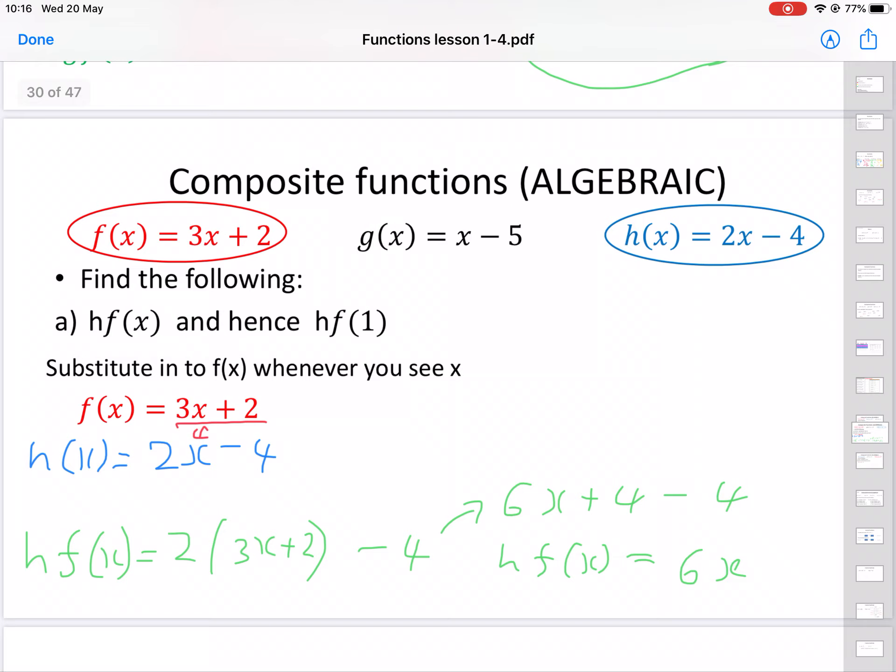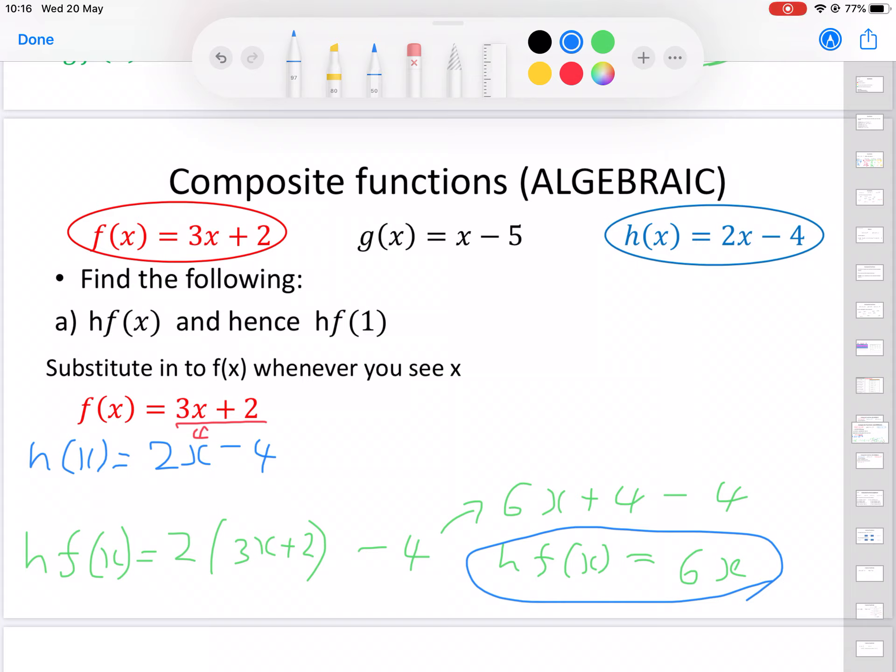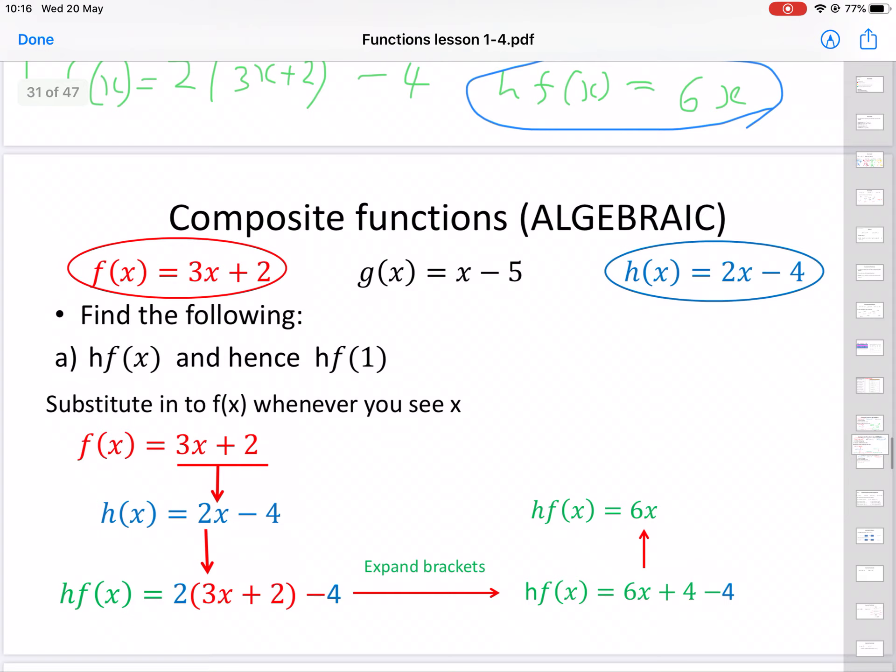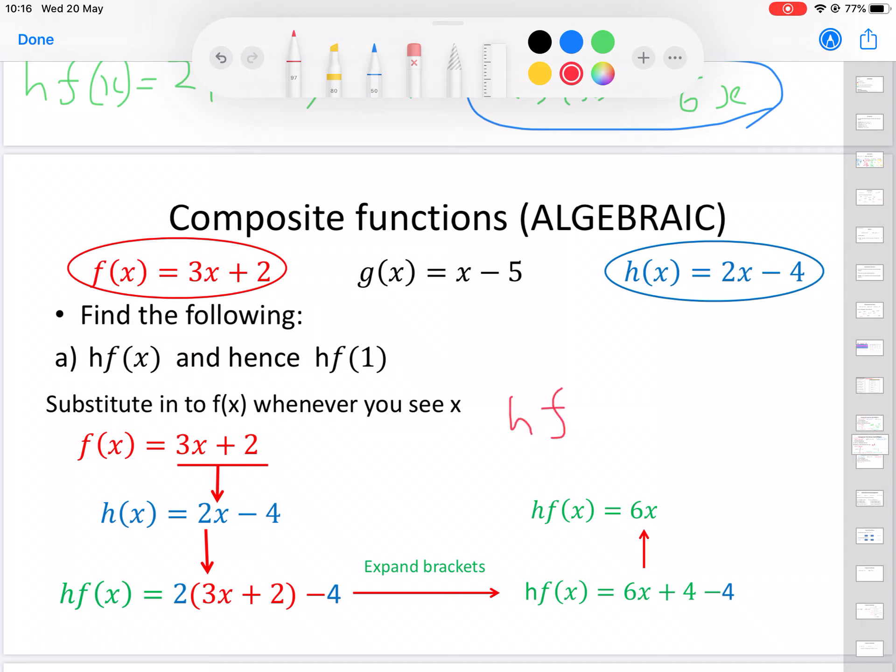So hf(x) = 6x. That there would be my final answer for that first stage, what is hf(x). A bit more tricky because we've got to make sure we're doubling that first function, but make sure you're going through it gradually and step by step. Here again, a bit clearer. We started with our f function, substituted it into our h function. You can see here we've still got the two lots of the 3x + 2, and then minusing that 4. Expand the brackets and then simplify, and now we just need to do the hf(1). That's 6 times 1, so my answer would be 6 for that second part.